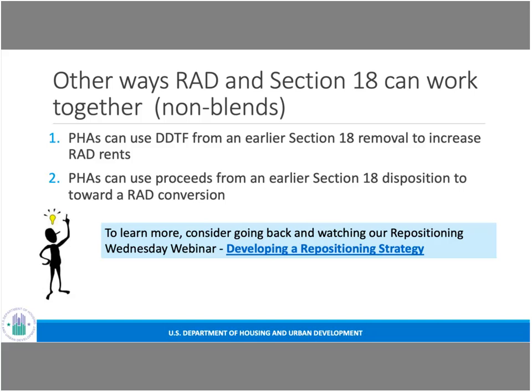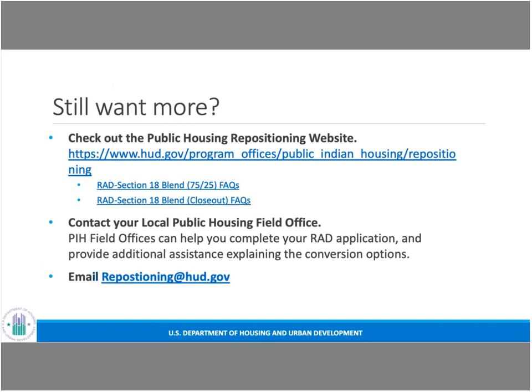We have more information on developing a repositioning strategy in one of our earlier recorded webinars on the repositioning website. We also have two solid FAQs on both the 75/25 blend and the closeout blend, covering eligibility, rules around the project-based voucher program, and processing requirements — available on the RAD Resource Desk and HUD's repositioning webpage. You should also contact your local public housing field office to discuss these options, and you can email repositioning@hud.gov.